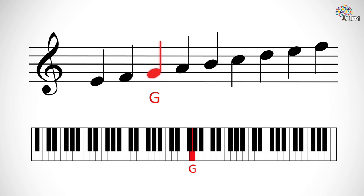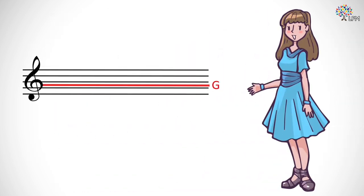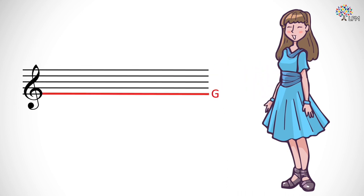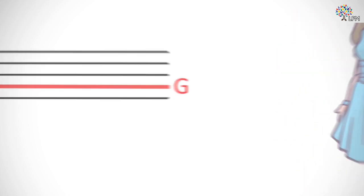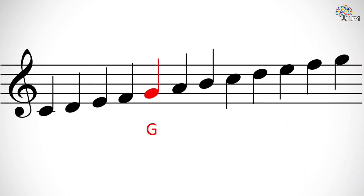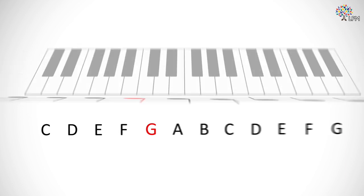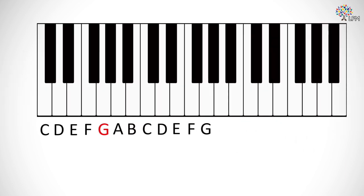The treble clef marks this particular G by curling around the second line from the bottom on its staff. The G above middle C will always be notated on that line when using treble clef. While hundreds of years ago you could move the treble clef or any other clef wherever you wanted on the staff to show where you wanted G to be, you probably won't see G clefs in any other positions these days. Now that we know where G is when using treble clef, we can figure out where all the other notes fall in relation to it. Each line and each space represents one white key on the piano. The black keys are accessed by using sharp and flat signs, so you can count up and down from that G to find every other note that the treble clef will cover.